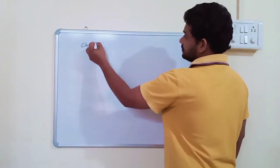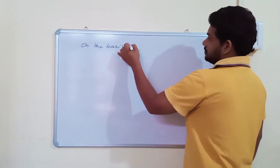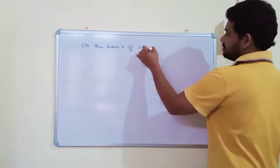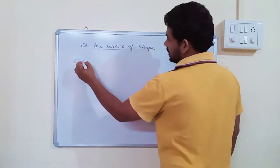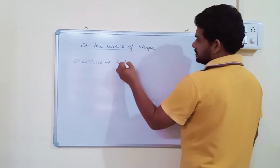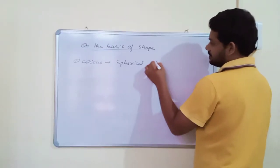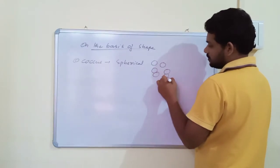On the basis of shape, bacteria is of four types. Coccus, they are spherical bacteria. Monococcus, sometimes diplococcus, sometimes tetracoccus. They are different types of coccus bacteria.